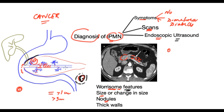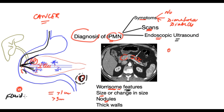When a cyst of the pancreas is found that is indeterminate, an endoscopic ultrasound is typically performed. An endoscope is a flexible tube that passes down the gullet into the stomach and parks itself right next to the pancreas. It has an ultrasound scanner attached to it, which takes very detailed pictures of the pancreas. A needle can come out and aspirate the fluid of the cyst, which is then analyzed for certain chemicals and for cancer cells.